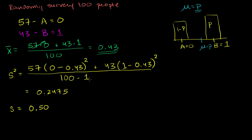Now, if you just look at this, your best estimate of the percentage of people voting for A or B is really what you just saw here. Your best estimate of the mean is that 43% of people are going to vote for B, and everyone else is going to vote for A. But an interesting question is: how good of a sample is that? Let's try to think of an interval around 43% for which we are roughly 95% sure that the real mean is in that interval.